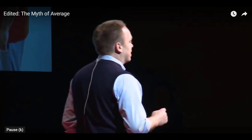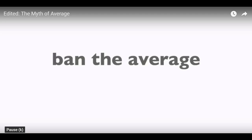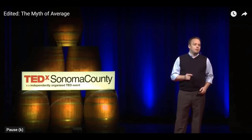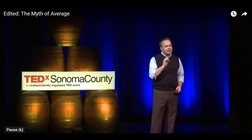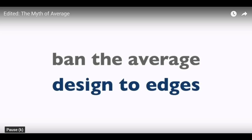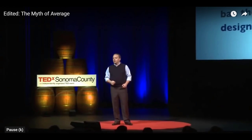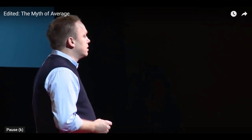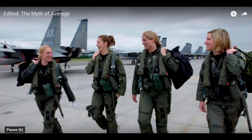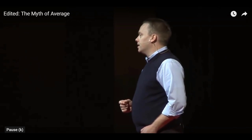So the Air Force realized they had a problem, and their response was bold. They banned the average, meaning that moving forward, they refused to buy fighter jets where the cockpit was designed for an average-sized pilot. Instead, they demanded that the companies who built these planes design them to the edges of dimensions of size — meaning rather than design for the average height, they wanted a cockpit that could accommodate as close to the shortest pilot and the tallest pilot as the technology would allow. And today, we have the most diverse pool of fighter pilots ever. Many of our top pilots would have never fit in a cockpit designed on average.